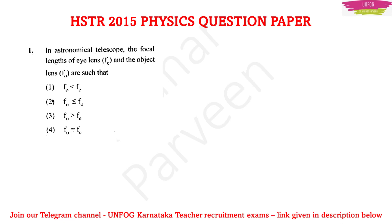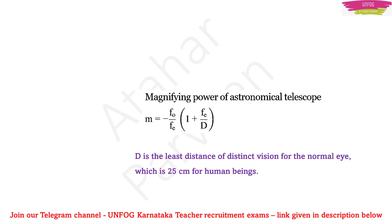Another important concept from the astronomical telescope is magnifying power. For an astronomical telescope, magnifying power equals minus F0 upon Fe, multiplied by 1 plus Fe upon D. Here, F0 is the focal length of the objective lens, Fe is the focal length of the eyepiece, and capital D is the least distance of distinct vision for a normal eye, which is 25 cm.